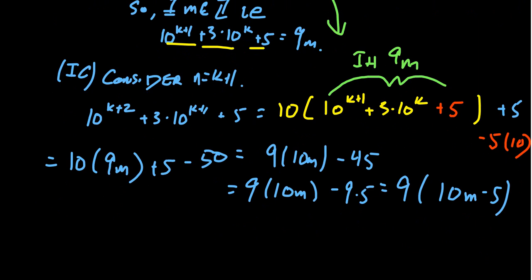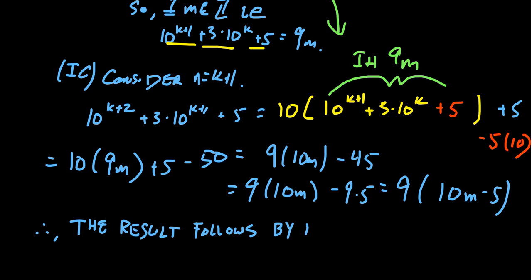This is exactly what we needed to show, so that proves the inductive case. We conclude: therefore the result follows by induction. We had our base case, our inductive hypothesis, and our inductive step — that's how the proof finishes.